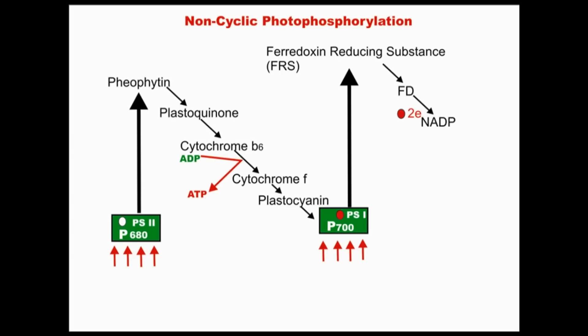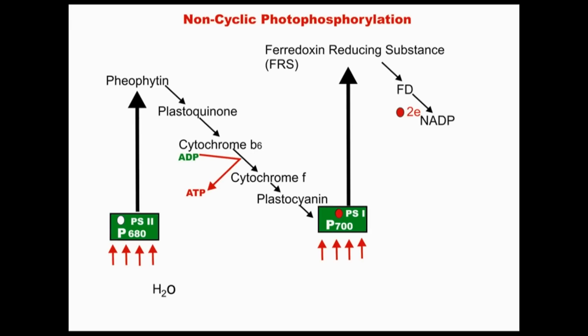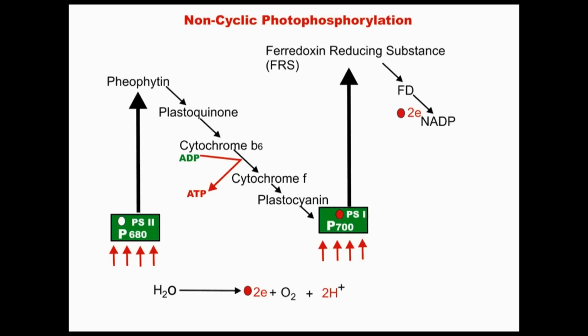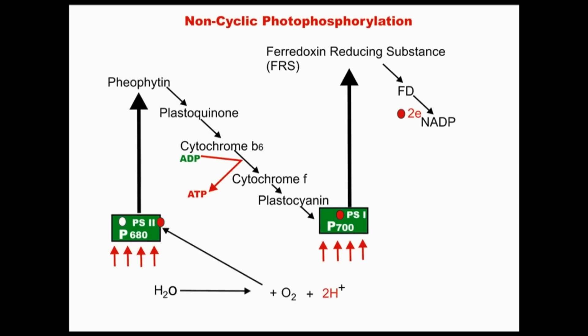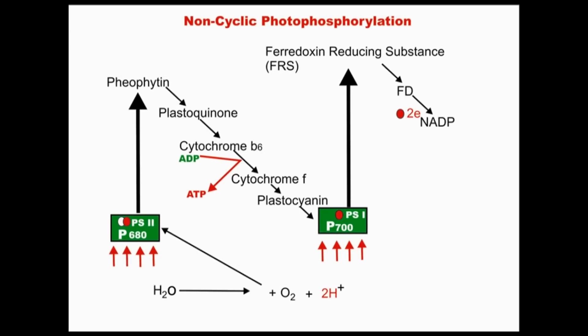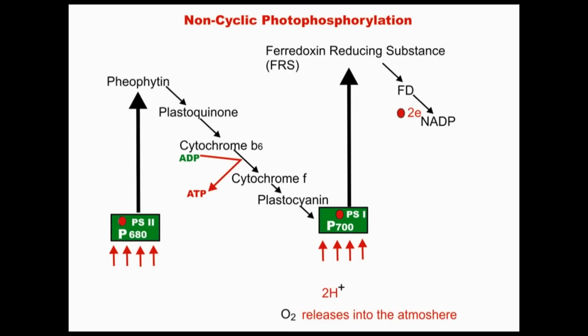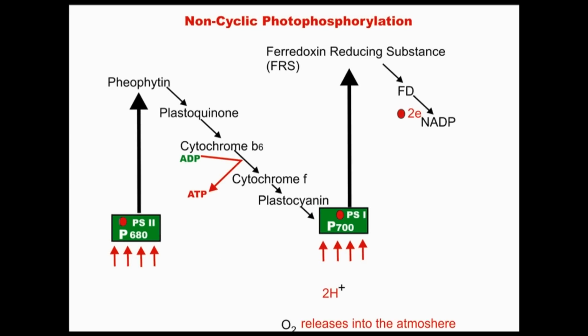Photosystem II now has a deficit of electrons. This electron hole will be filled by electrons released after photolysis of water. Water molecules split into hydrogen, oxygen, and electrons. The electrons fill the electron hole in photosystem II, and the molecular oxygen is released into the atmosphere.